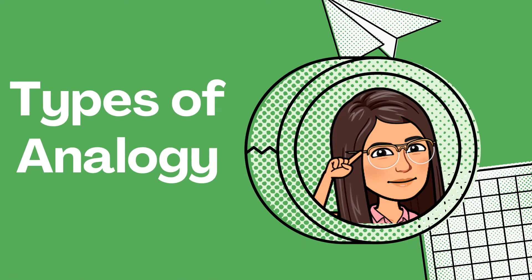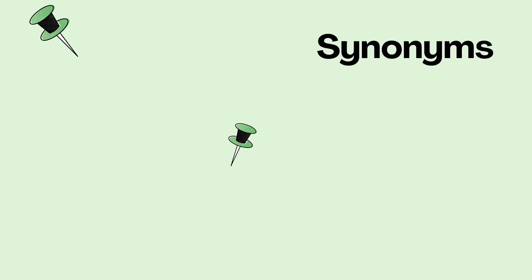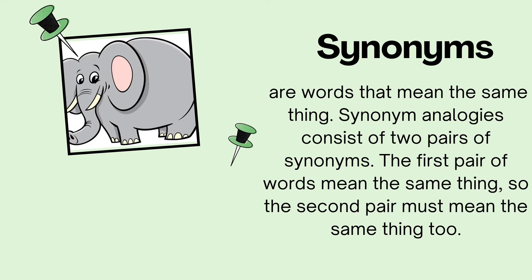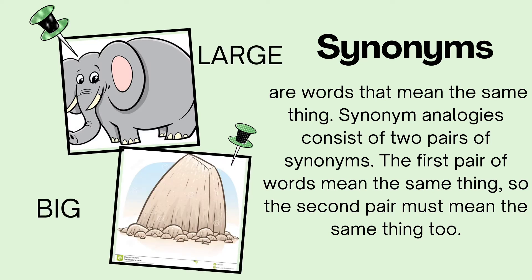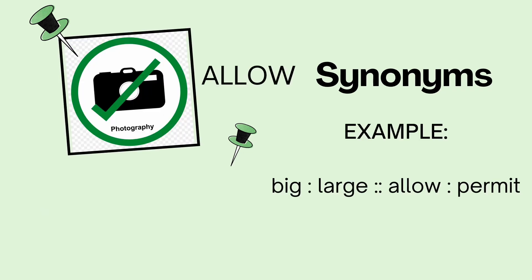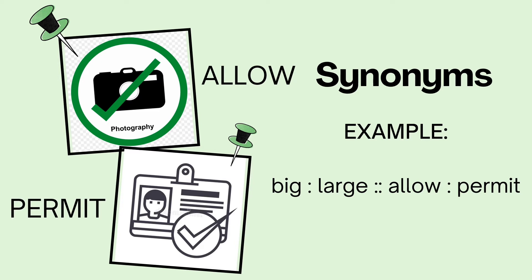Now, let's discuss the different types of analogy. The first one is synonyms. These are words that mean the same thing. Synonym analogies consist of two pairs of synonyms. The first pair of words mean the same thing, so the second pair must mean the same thing too. For example, large and big. Another pair of synonyms is allow and permit. Therefore, our synonym analogy is: big is to large as allow is to permit.